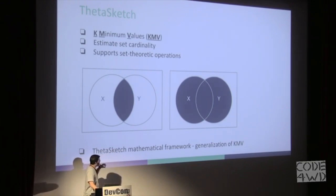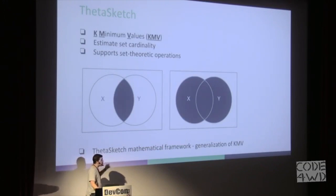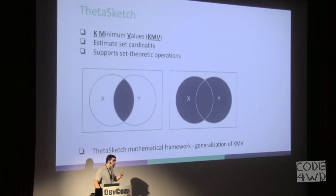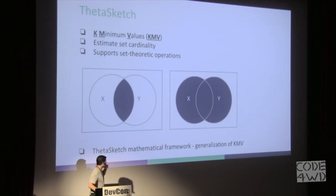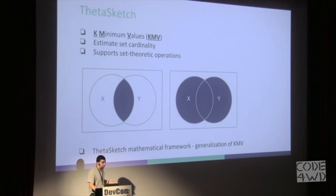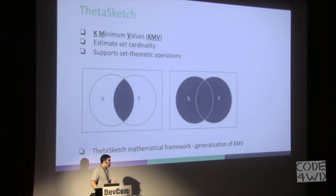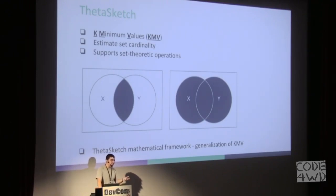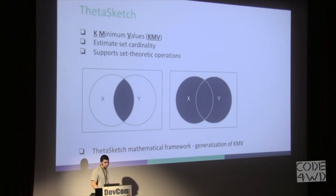Back to Druid — Druid supports KMV using something called ThetaSketch. ThetaSketch is a mathematical framework that generalizes the idea of KMV. For using it in Druid, you just specify the ThetaSketch aggregator instead of a sum or count aggregator, and then you get estimated counts.